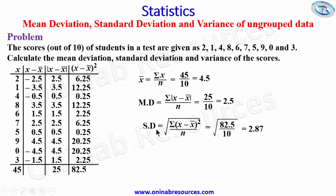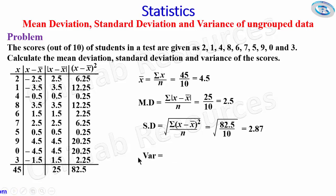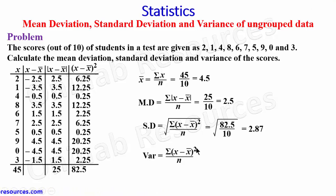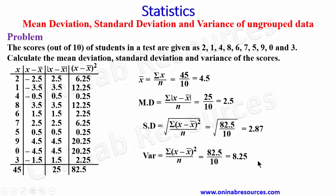That is all for standard deviation. We then go for variance. The variance of these scores is summation of (x minus x̄)² over n. It is as good as squaring the standard deviation. We have already gotten the summation of (x minus x̄)² as 82.5, and n is 10. So our answer is 8.25, which is the variance of the scores.